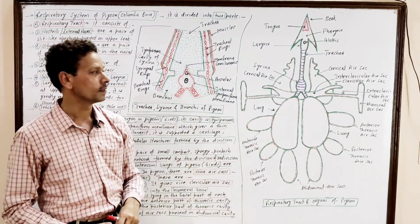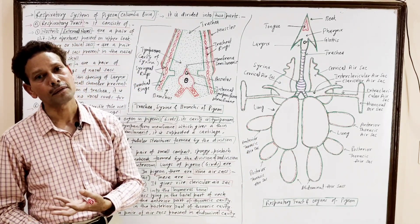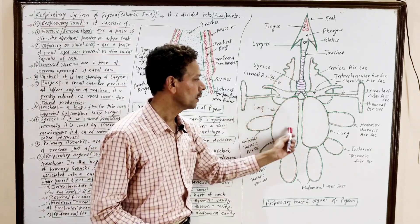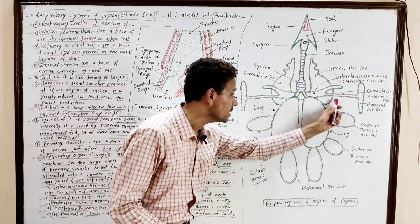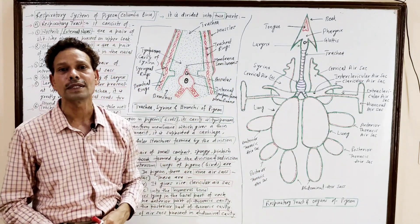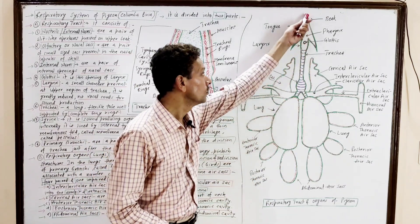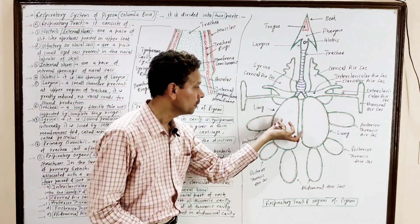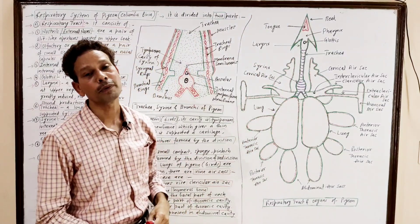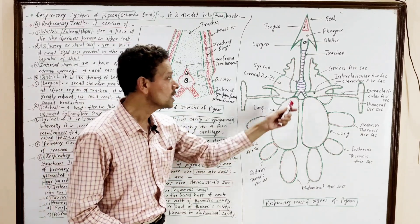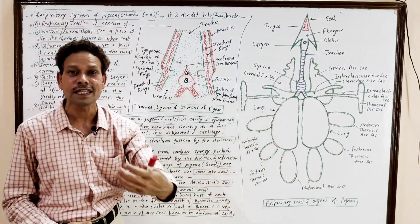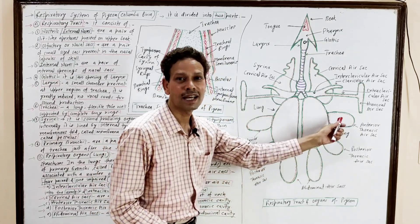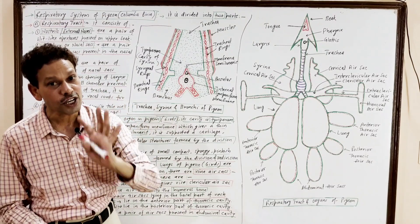The mechanism of breathing: at the time of inspiration, fresh air enters into the lungs as well as into these additional air sacs or balloons through the respiratory tract. At the time of expiration, the foul air is removed from the lungs through the respiratory tract. During inspiration, these additional air sacs also receive fresh air. But note that these additional air sacs do not involve in the exchange of gases.